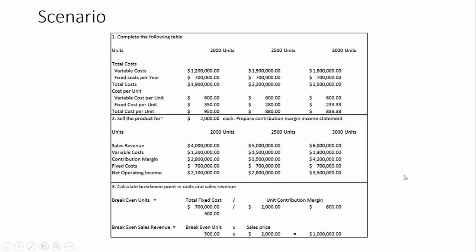Now we want to calculate the break-even point in units and in sales revenue. For break-even in units, we take total fixed costs of $700,000 and divide by the unit contribution margin. We're selling at $2,000 with a variable cost per unit of $600, so our unit contribution margin is $1,400. So $700,000 divided by $1,400 gives us 500 units as our break-even point. Break-even in sales revenue is 500 units times $2,000, which equals $1,000,000.